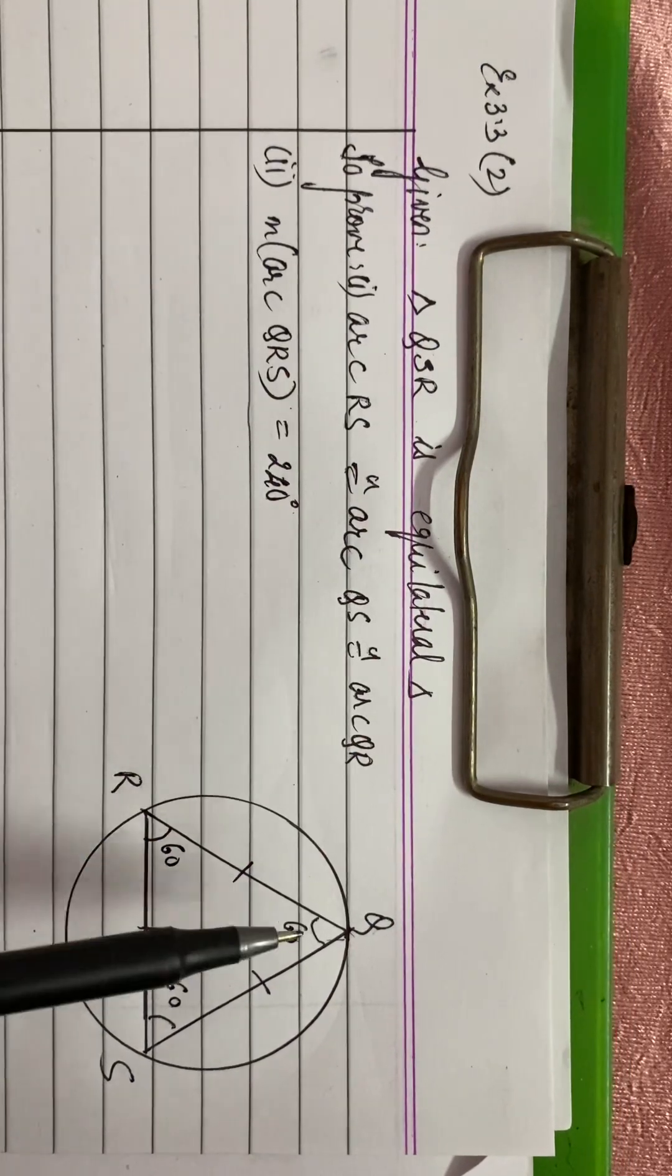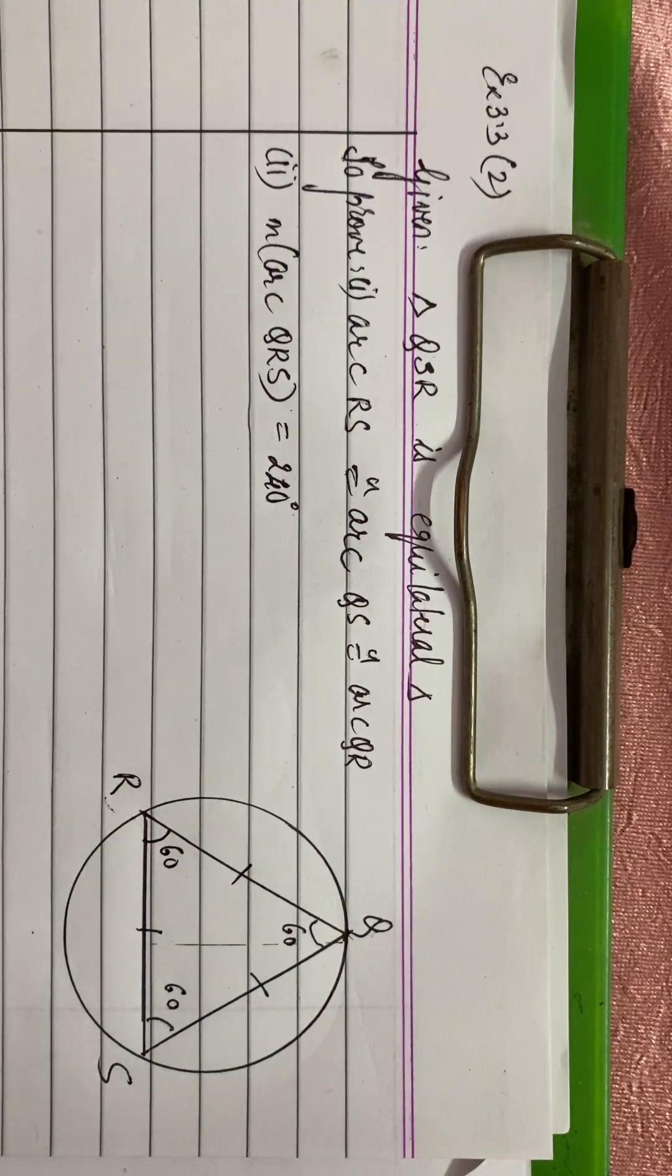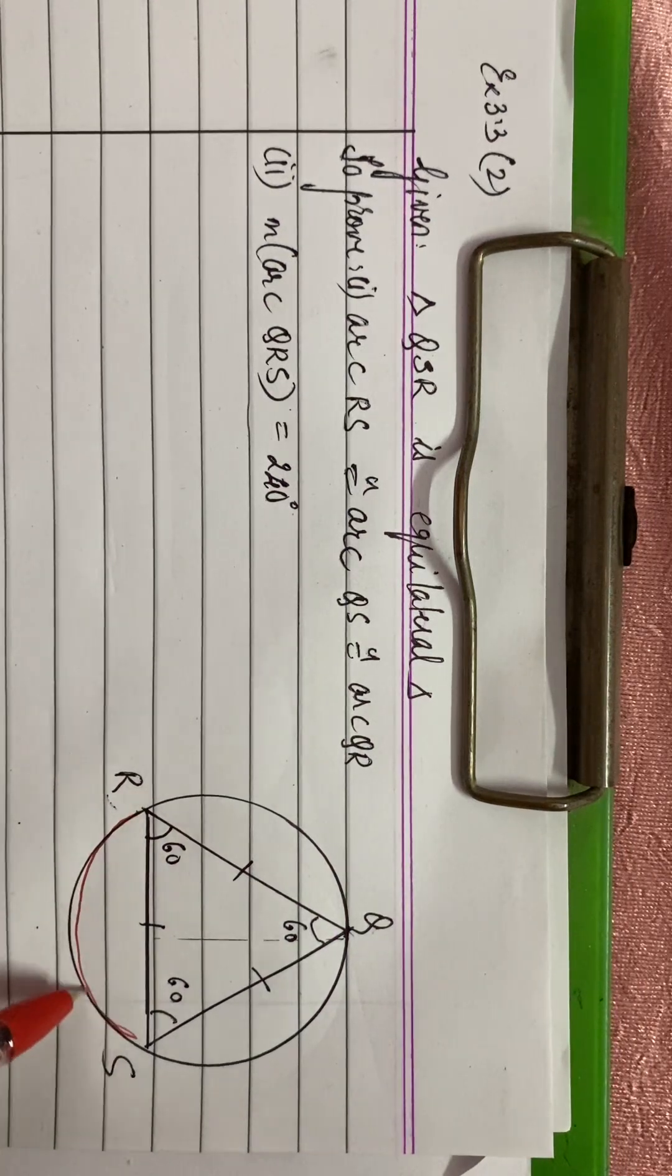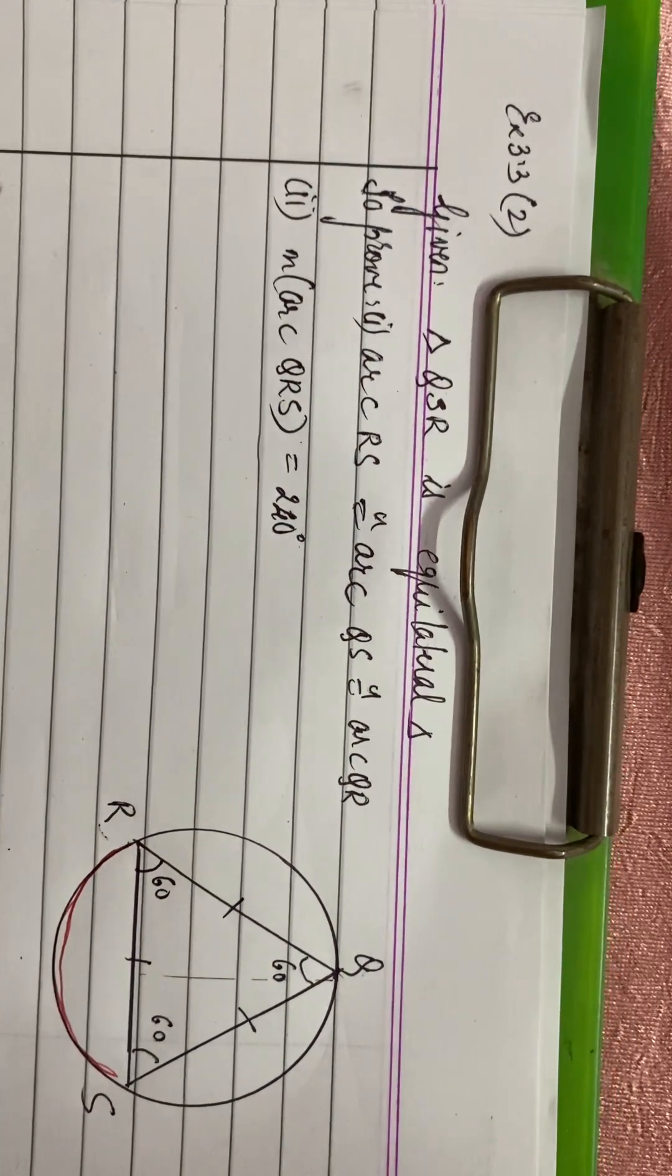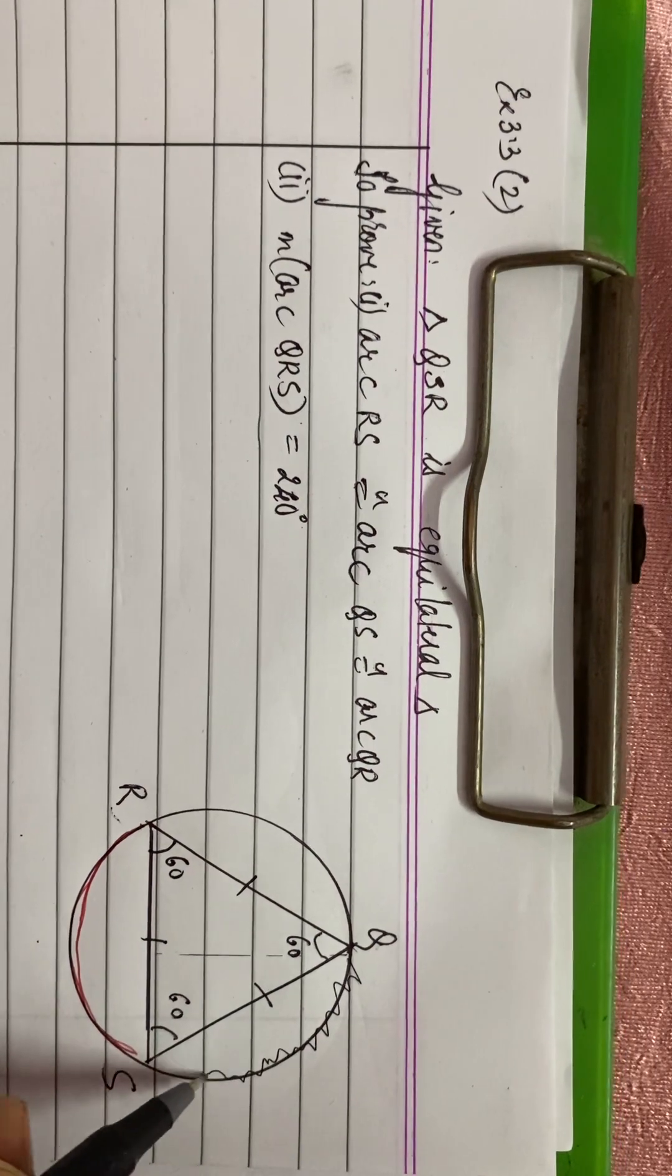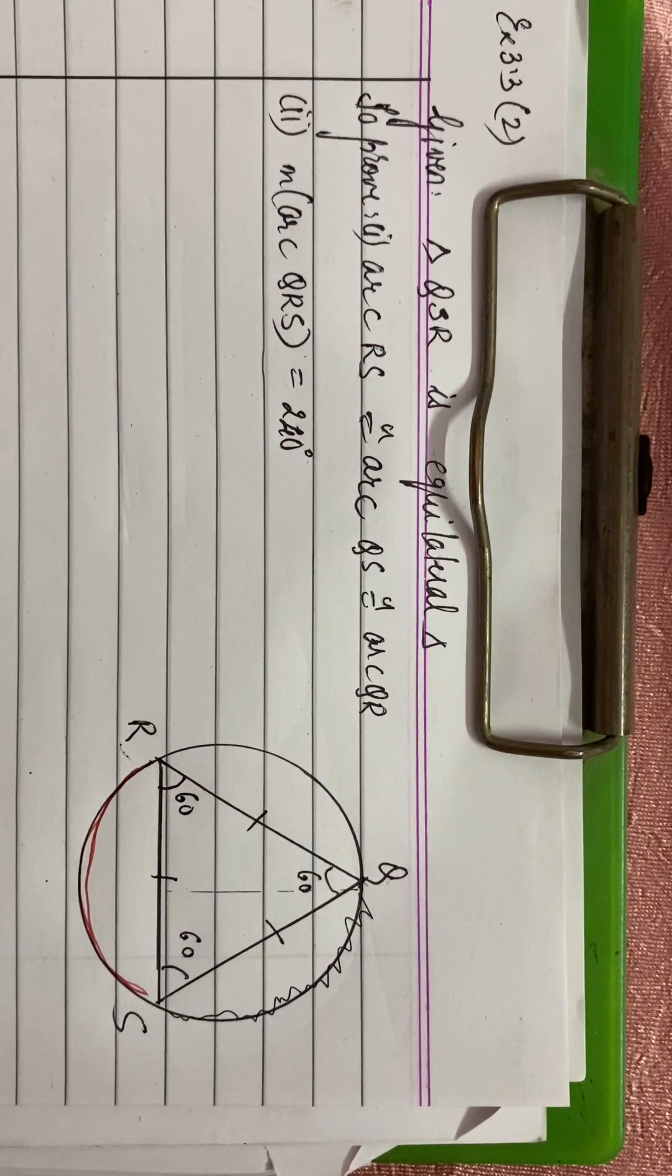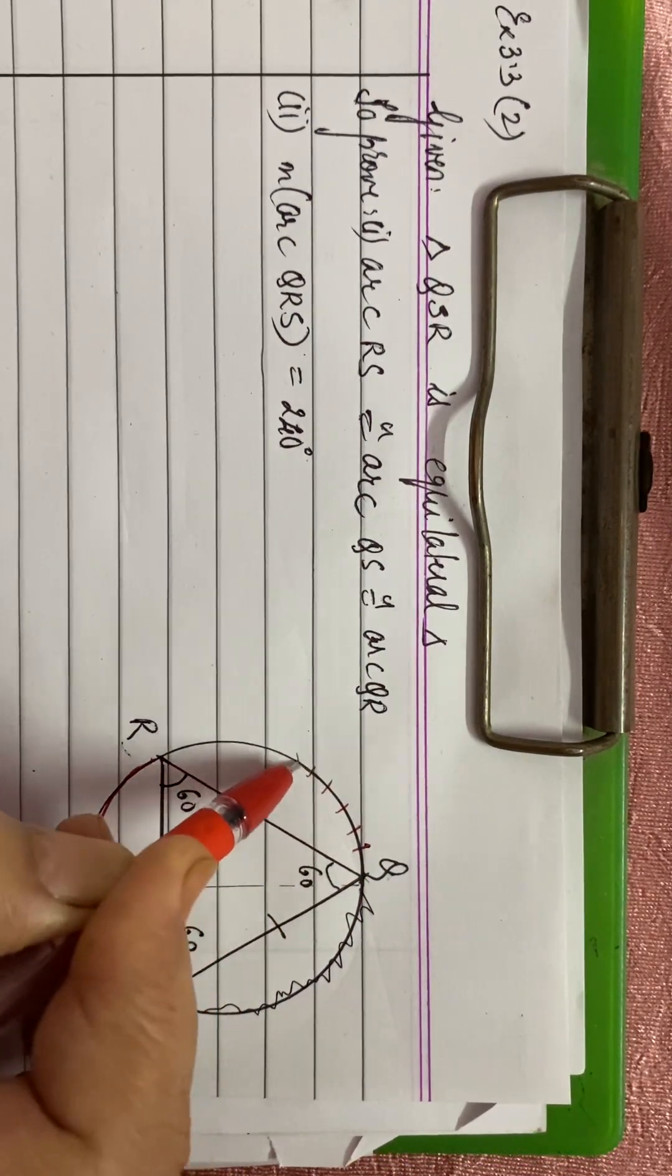We have to show what? That this arc RS, this is your arc RS, is equal to which arc? It is equal to arc QS. This is your QS. And this arc is equal to arc QR. This is your arc QR.